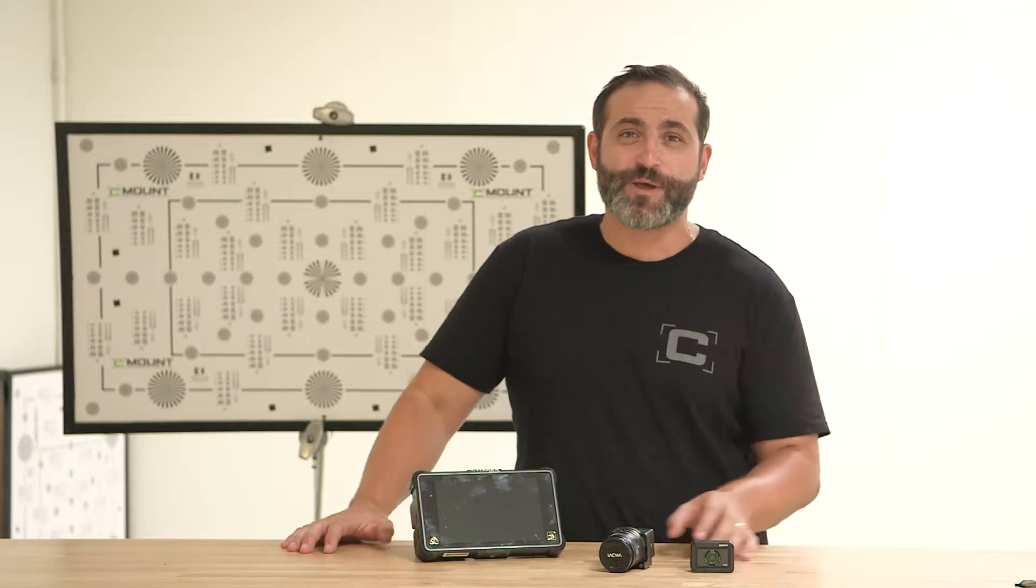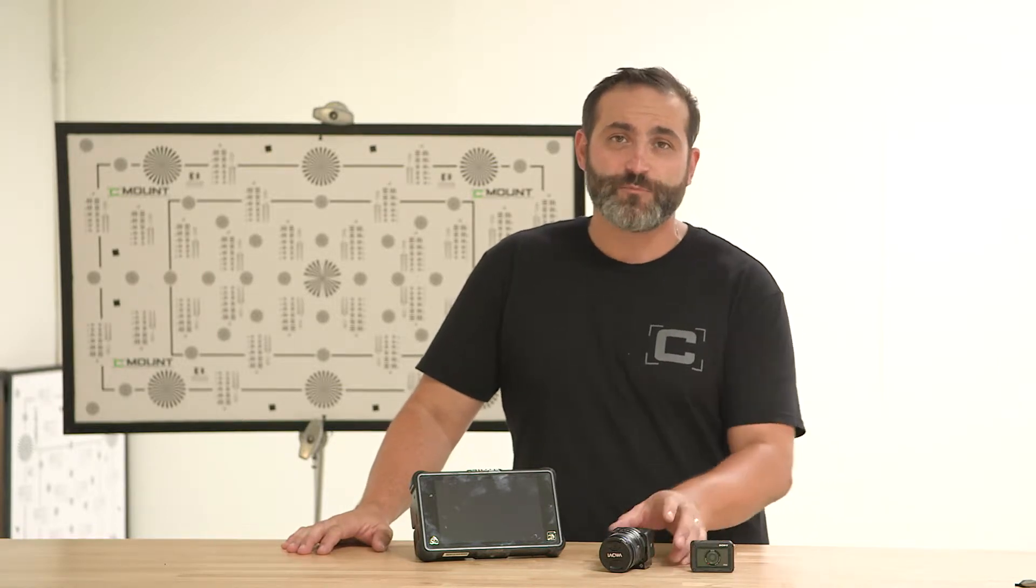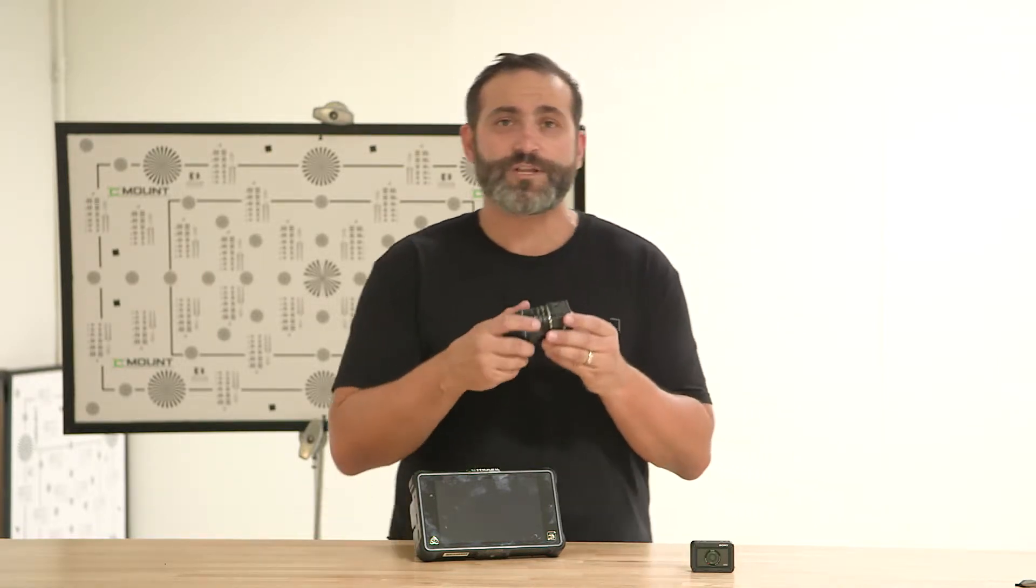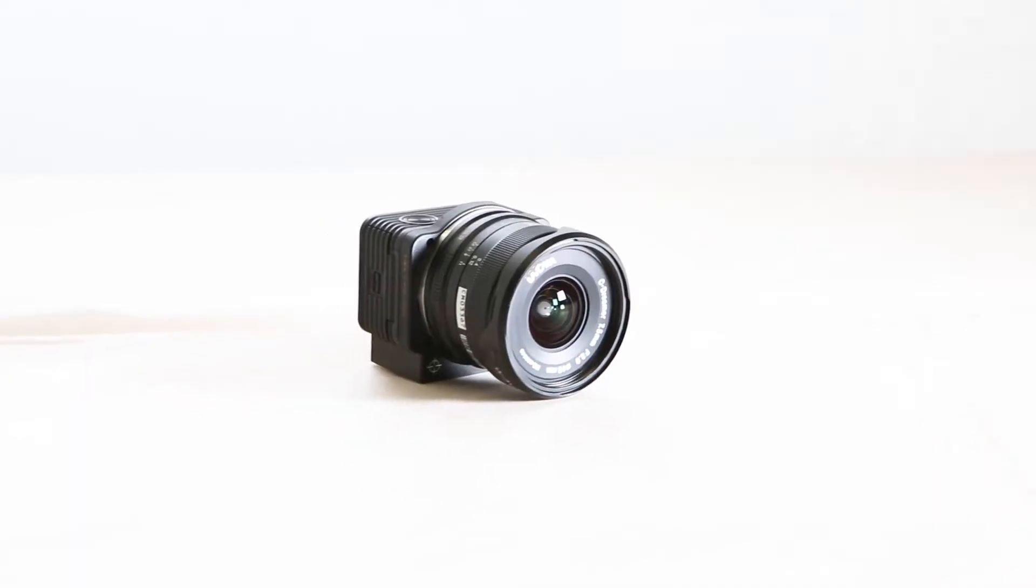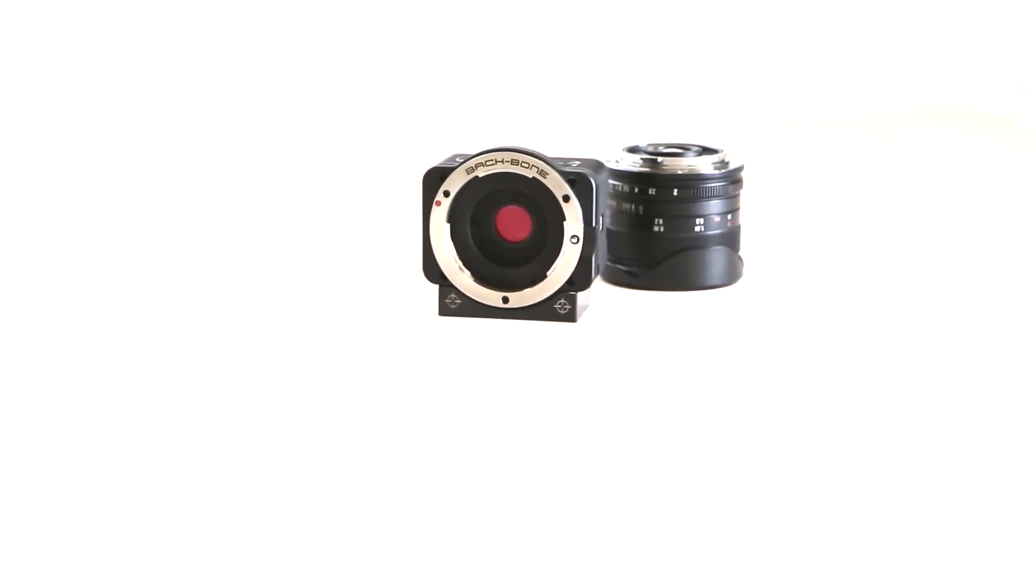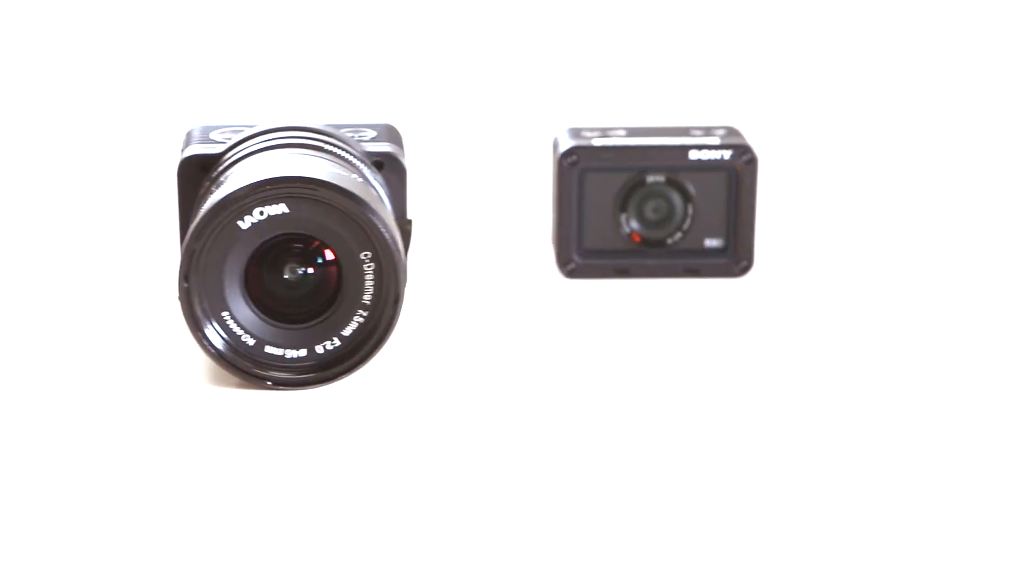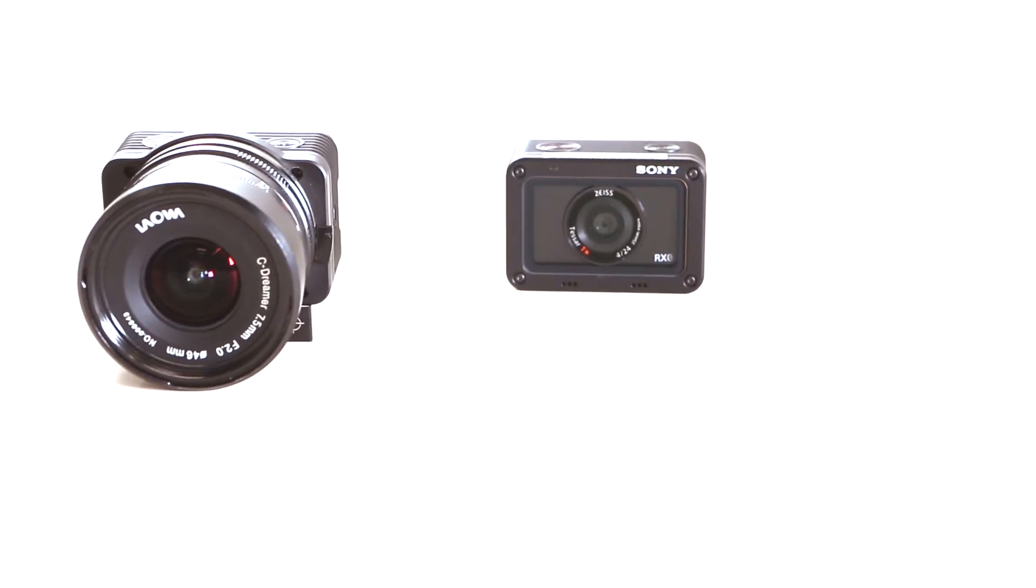Hey, it's Jason from CMount. I'm talking about our new Sony RX0 camera package. It comes with the modified Sony RX0, which allows you to use micro four-thirds lenses to cover the one-inch image sensor. This modification gets you out of the fixed aperture lens that the camera comes natively with, which is like a 24mm equivalent.